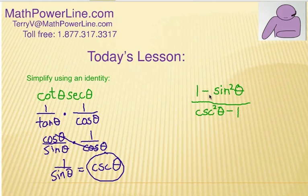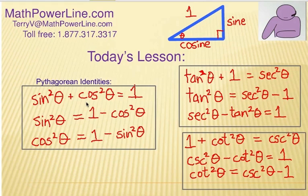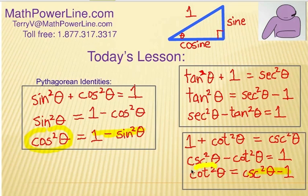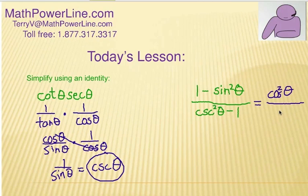Hopefully you've tried this one. We have sine squared theta, and it's one minus sine squared theta on the top and cosecant squared theta minus one on the bottom. Those are pretty familiar. Let's look at the Pythagorean identities. On the top of the fraction, I had one minus sine squared theta — notice how we can substitute cosine squared theta straight from this identity. And cosecant squared theta minus one — I find it here — we can substitute cotangent squared theta for that.